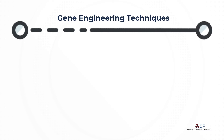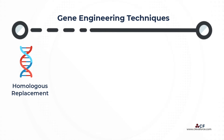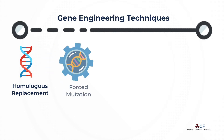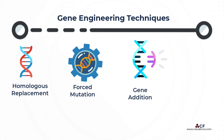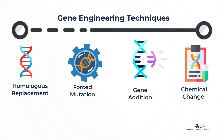There are several methods for altering the gene. The DNA in the gene could be replaced by DNA from outside the gene, a process known as homologous replacement. Alternatively, the gene could be forced to mutate, or a gene could simply be added. Similarly, a chemical could be used to simply turn off a gene, preventing it from functioning.